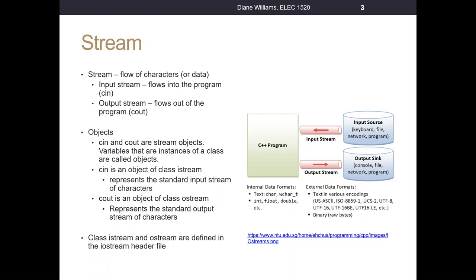We don't always want to enter all our information from the keyboard. We might want to read from a file, or we might want to write information out to a file. So we want to learn how to use file stream objects. Cin and cout are technically called stream objects — they're already declared for us, we don't have to declare them.